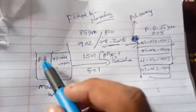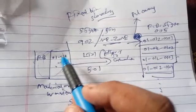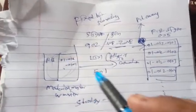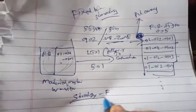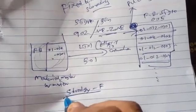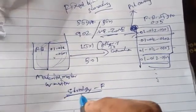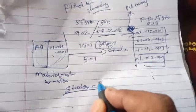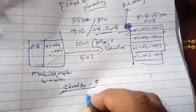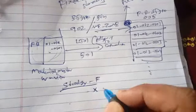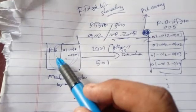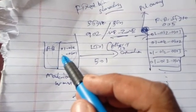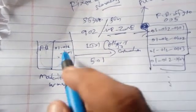First, I have defined the put away strategy F in the storage type control parameters for the storage type — this is the fixed bin strategy. I have also enabled addition to existing stock, indicated by X, which is allowed for this strategy.